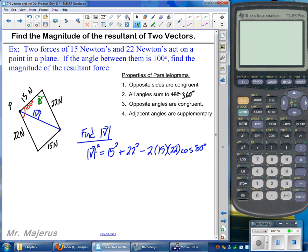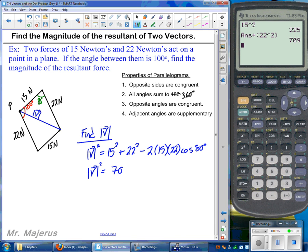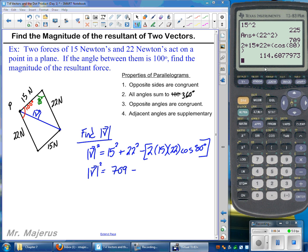All right, so if we calculate this out, solve for magnitude of V, we will get the magnitude of our resultant. Let's go ahead and plug some of this into our calculator. 15 squared plus 22 squared will give us 709. Be careful with this part. Remember, it's almost like a set of grouping symbols here. You've got to multiply before you subtract. So if we type all that in, we'll get 2 times 15 times 22 times cosine of 80. And that part will be negative 114.607.